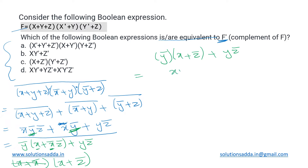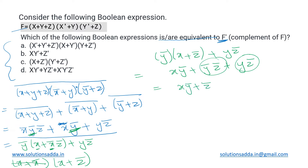We can write this as xȳ + ȳz̄ + yz̄. From the last two terms we take z̄ as common, giving xȳ + z̄(y + ȳ), and since y + ȳ = 1, this simplifies to the final value: f̄ = xȳ + z̄.